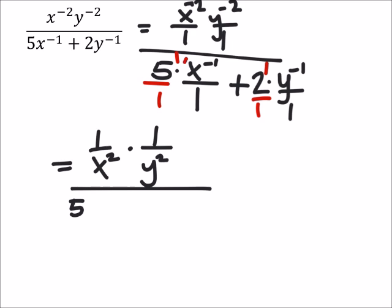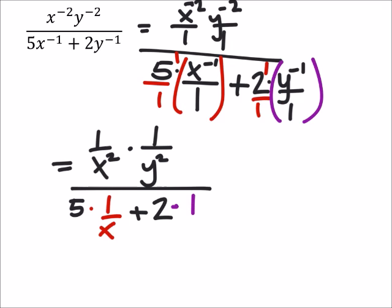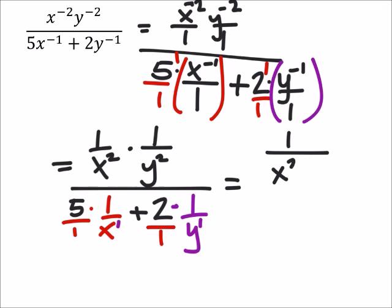So now I'm going to reciprocate each one of these. Starting with x to the power of negative two — I'm going to make that one over x squared. Reciprocating that fraction makes the exponent positive. This is multiplied by one over y squared. I don't reciprocate the five because it has a positive exponent. But I will reciprocate x to the power of negative one, multiplying by one over x. Then we add two multiplied by one over y — the two times one over y. We don't really show exponents of one.